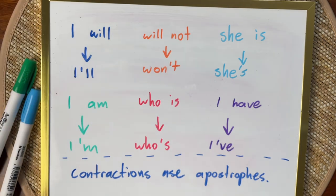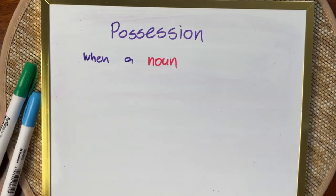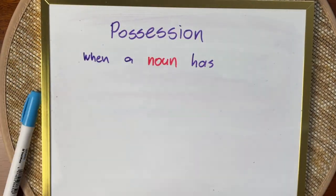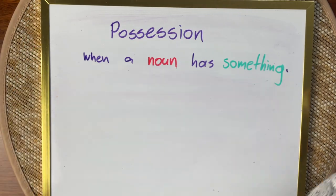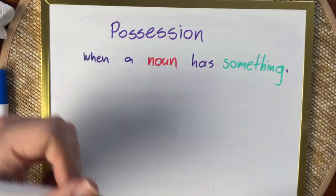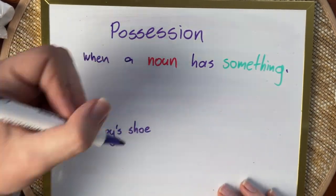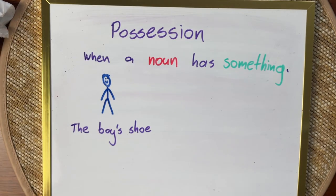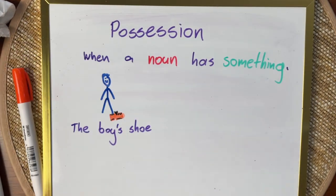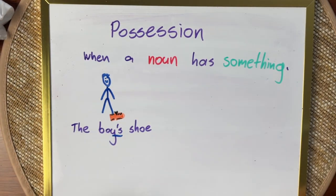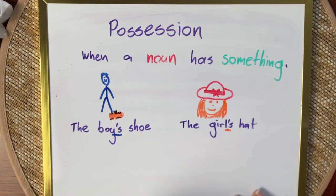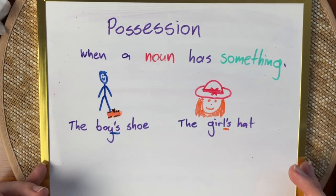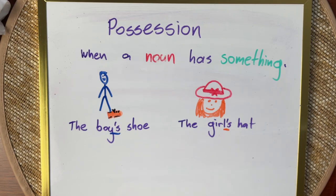Then there's apostrophes to show possession. We start with a noun — which is a person, place, or thing — and that noun owns something or has something. We use an apostrophe to show that. For example: 'the boy's shoes' — the shoes that belong to the boy. We know that because there's an apostrophe. 'The girl's hat' — the hat that belongs to the girl. We know that because there's a possessive apostrophe after 'girl,' the person who owns something.